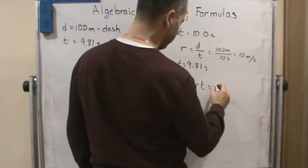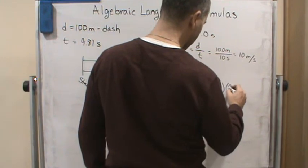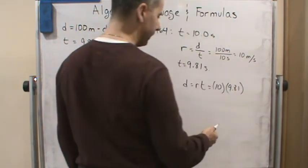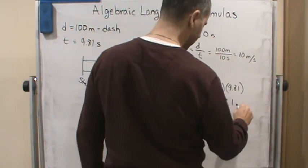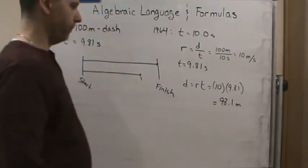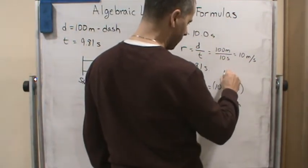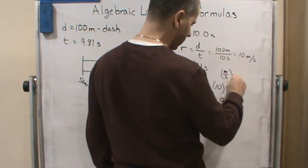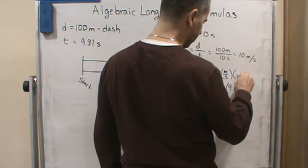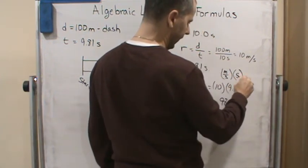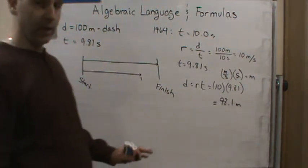So let's do that. That's going to be the rate, which is 10 times 9.81. So that means 98.1 meters, right? And again, think of the units. This is meters per second, times seconds. The seconds are going to cancel, and we get meters. So that works out.